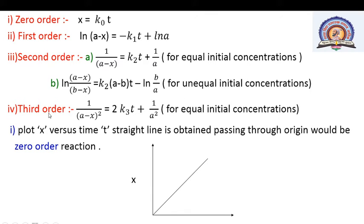The third order reaction is not included in our syllabus, but its integrated rate equation is 1/(a−x)² = 2k₃·t + 1/a², for equal initial concentrations. These are the forms of the integrated rate equations for zero, first, second, and third order reactions. With the help of these equations we plot the corresponding graphs.